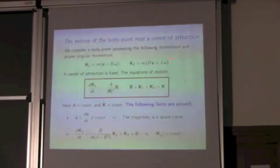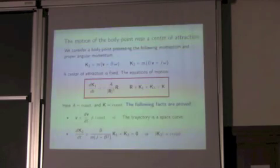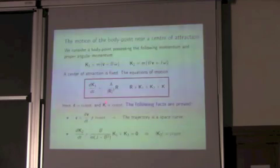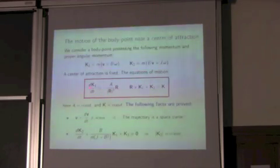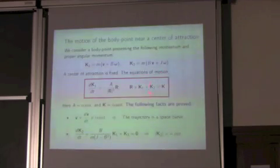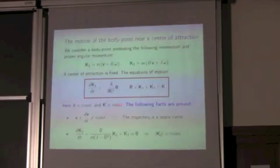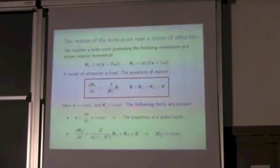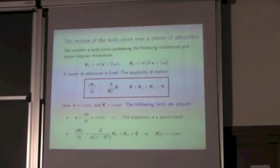Now let us consider a more complicated problem — the motion of the body point near a center of attraction, for example, under gravity force or Coulomb force. The equations of motion are shown here: the equation of momentum balance and the equation of angular momentum balance, where k and a are constants. It is proved that the trajectory of this particle is a space curve, and the magnitude of proper angular momentum is constant.